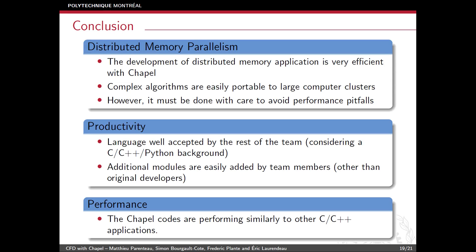To conclude, we are extremely impressed by how easy it was to extend a CFD code to a distributed memory network. However, it must be done with care, as we explained with the performance pitfalls. We were also quite impressed with the productivity achieved with the language — the number of features added to the code grew almost exponentially once we had a working version. Chapel delivers really competitive results when compared to C and C++ applications, and we believe we can improve those numbers further.